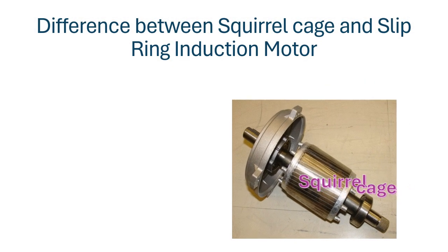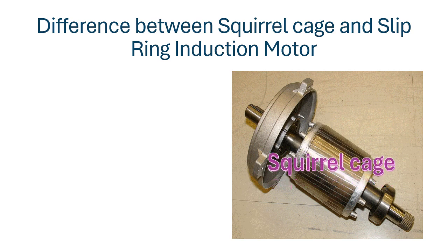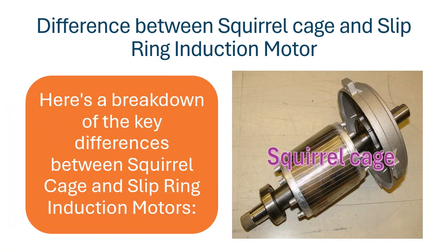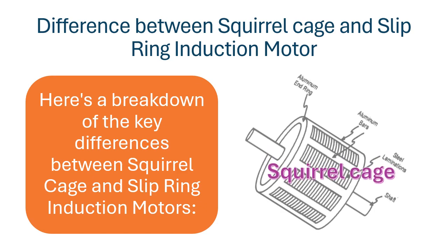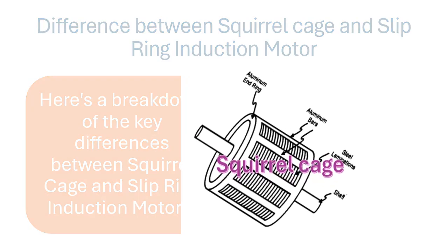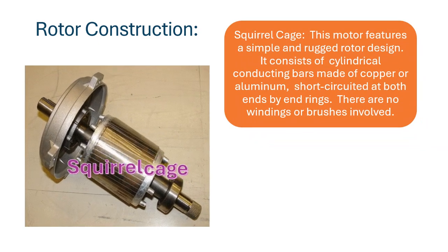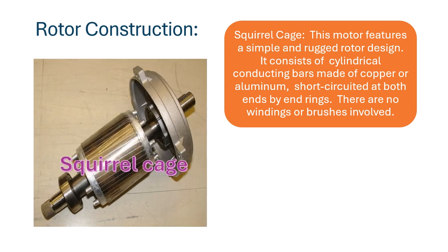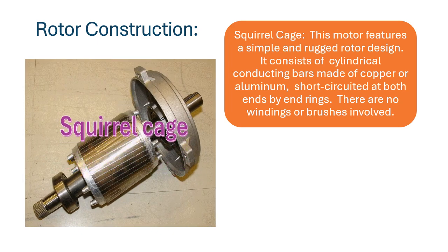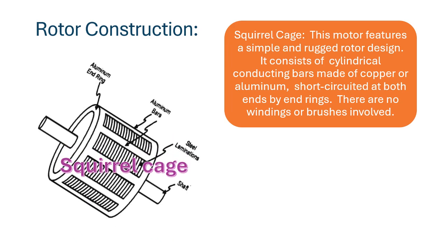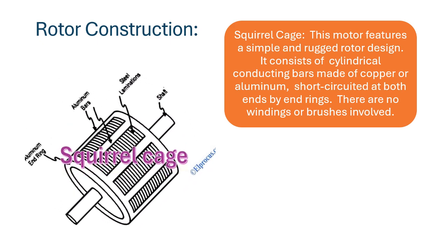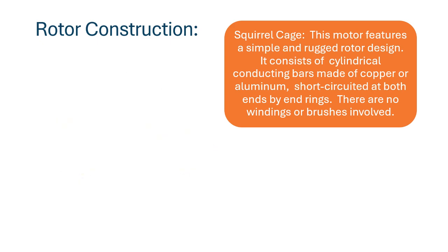Difference between Squirrel Cage and Slip Ring Induction Motors. Here is a breakdown of the key differences. Rotor Construction — Squirrel Cage: this motor features a simple and rugged rotor design. It consists of cylindrical conducting bars made of copper or aluminum, short circuited at both ends by end rings. There are no windings or brushes involved.